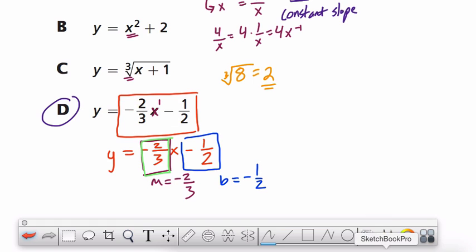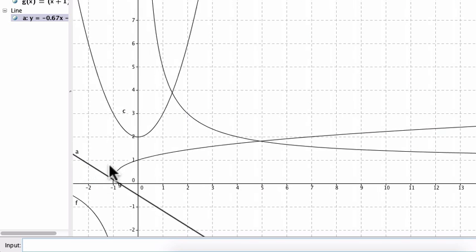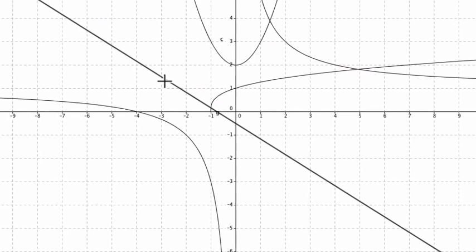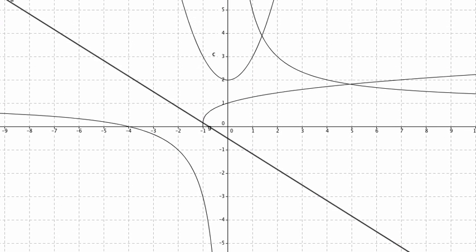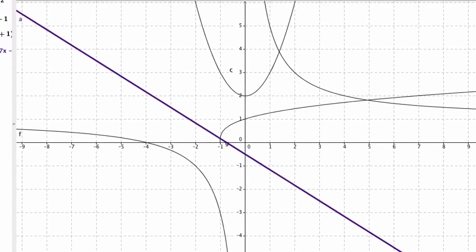And then negative two-thirds x minus one-half. So y equals negative two-thirds x minus one-half. Here we can see that's our linear function. So again, you can graph these things if you want. Of course, it might take a while and there's no space provided for this question. But you can see that the graphs support the idea that the only linear function was the last one on the list.